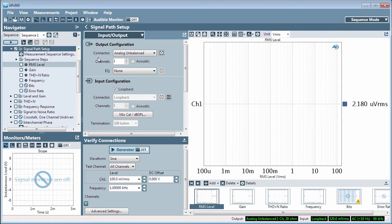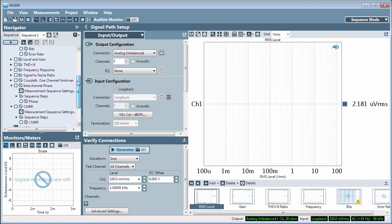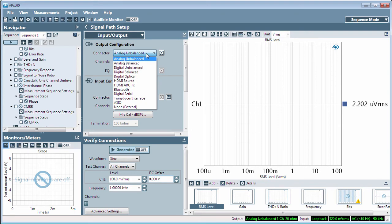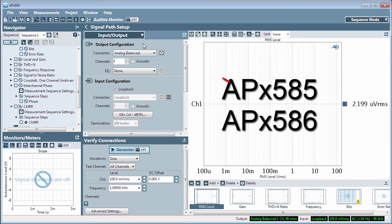In APX, the CMRR measurement is only available when using analog-balanced outputs, and it uses relay switching that's not available in the eight-channel output modules of the APX 585 or 586.